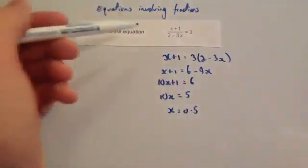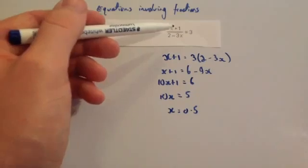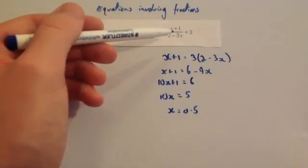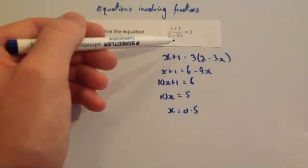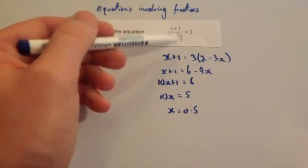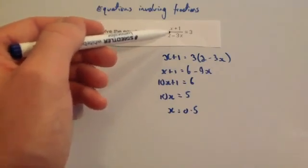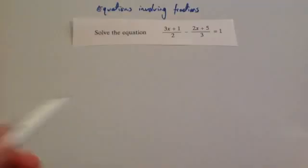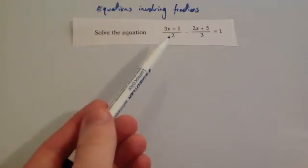We can check our answer: 0.5 plus 1 is 1.5, divided by 2 subtract 3 times 0.5, which would be 0.5, and 1.5 divided by 0.5 would be 3. Correct.